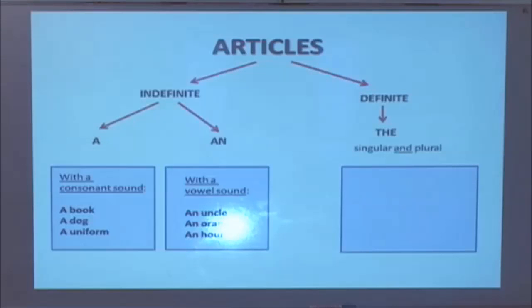The definite article the is used for both the singular and plural nouns. Examples, the house or the houses. However, when the nouns begin with a vowel sound, the definite article the is pronounced as the, for example, the ant, the ice cream.